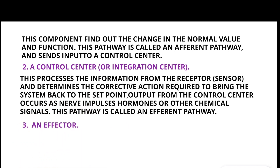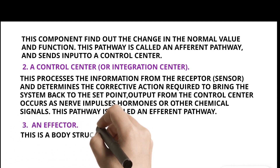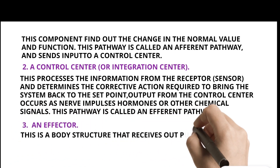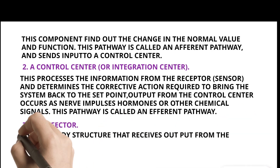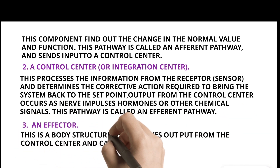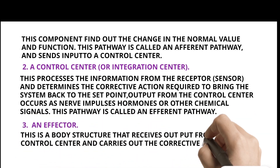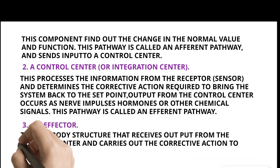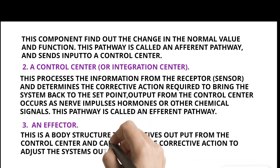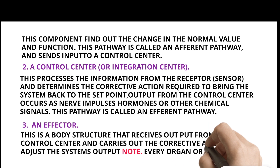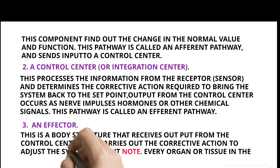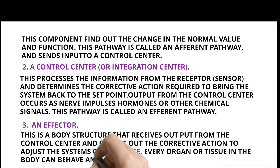Output from the control center occurs as nerve impulses, hormones, or other chemical signals. This pathway is called an efferent pathway. Third, an effector. This is a body structure that receives output from the control center and carries out the corrective action to adjust the system's output. Note: every organ or tissue in the body can behave as an effector.